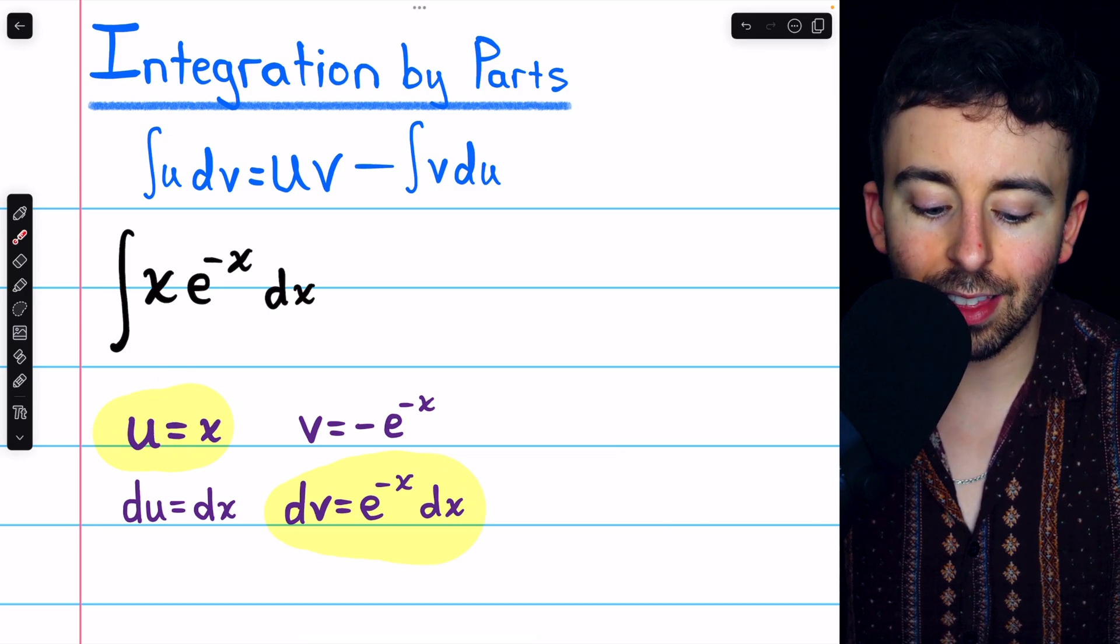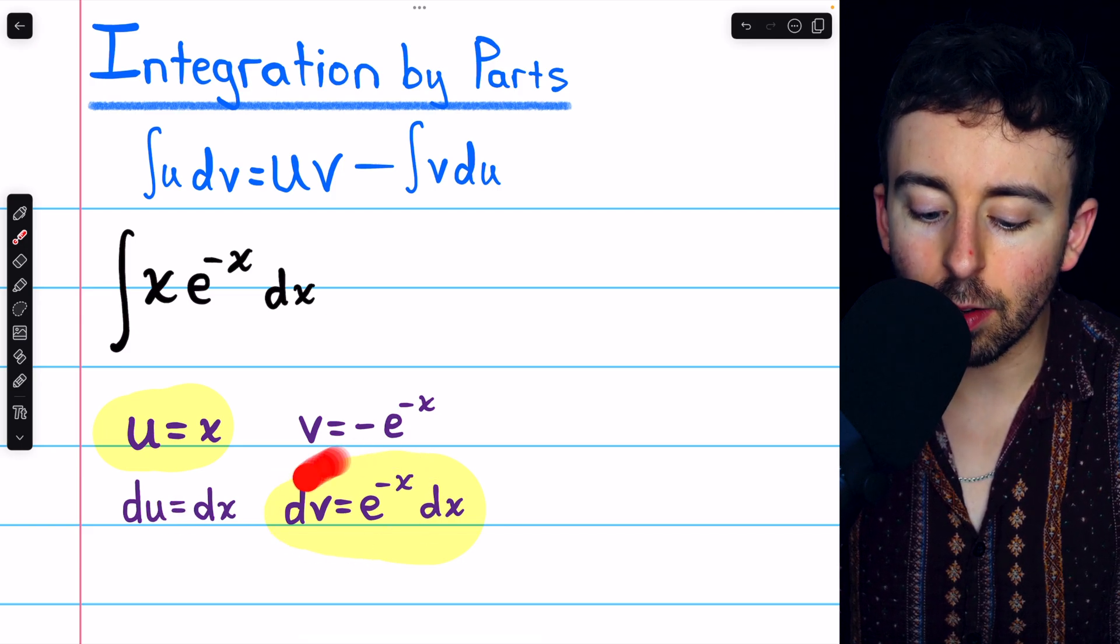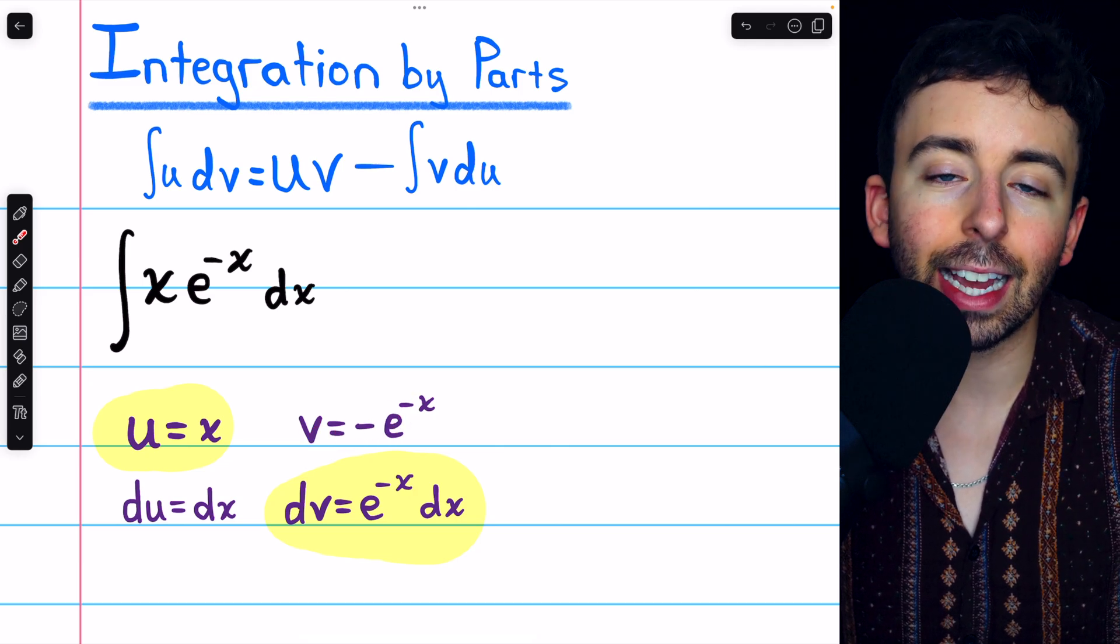Then, differentiating u, we get that du equals dx. And integrating dv, we get that v equals negative e to the negative x.